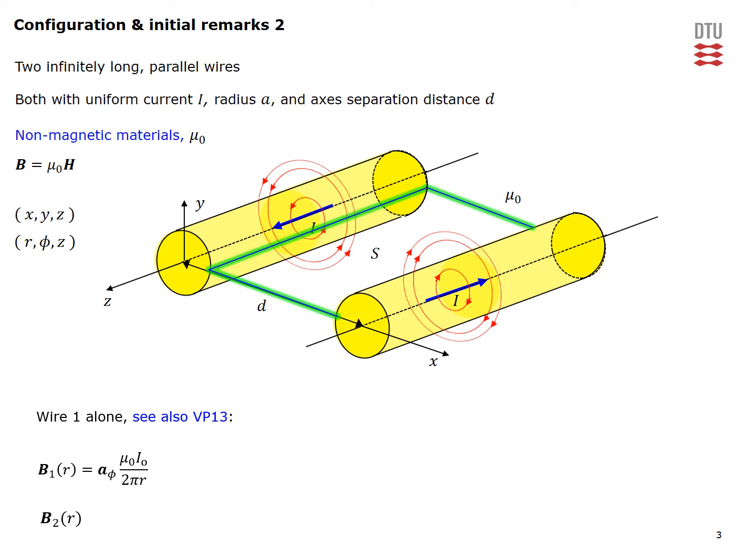When this wire is alone in free space we determined in this video problem the external field for this current configuration. A similar field will result from the second wire when it's located alone in free space.